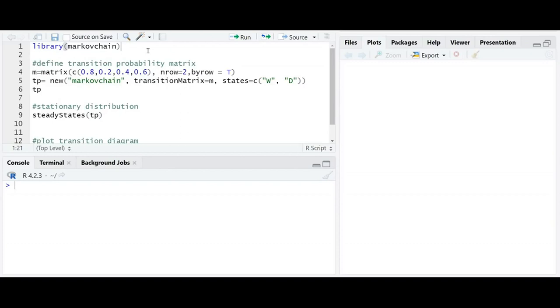First, we call the library function. Next, we define the transition probability matrix. M equals to matrix C 0.8, 0.2, 0.4 and 0.6 and row equals to 2. Since tpm is a square matrix, column will also be 2. And by row equals to 2 as we will be moving by row.